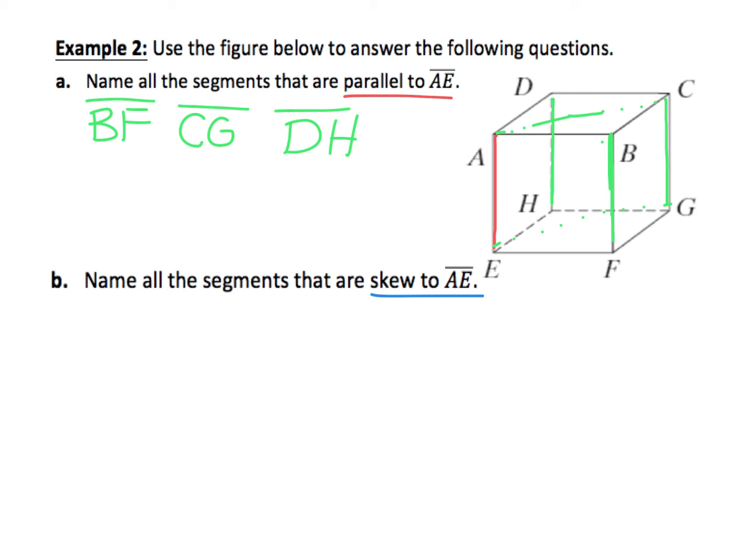Let's look at DC. If it helps, you can find something like a shoebox at your house that might help you visualize this better. A box of Kleenex works pretty good. You can see how DC is never going to cross AE. So DC would be skew, as would HG.